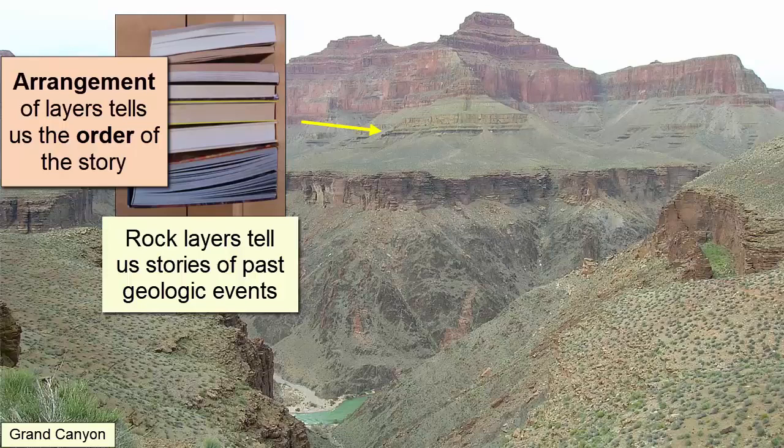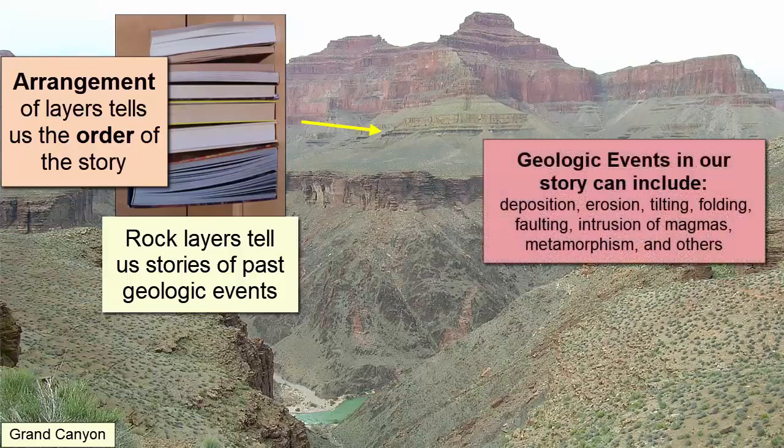The ways in which the rock layers are arranged relative to each other tell us the sequence of events that occurred in a particular location — what happened first in our story and what happened last. A geologic event can be any natural occurrence involving geological materials, including deposition, erosion, tilting, folding, faulting, intrusion of magmas, metamorphism, and others.